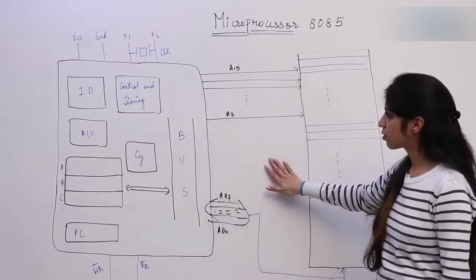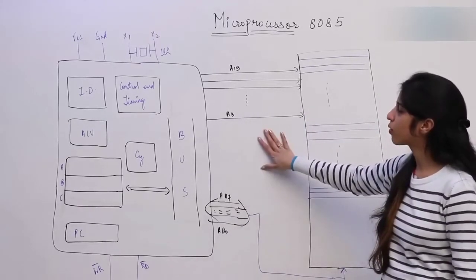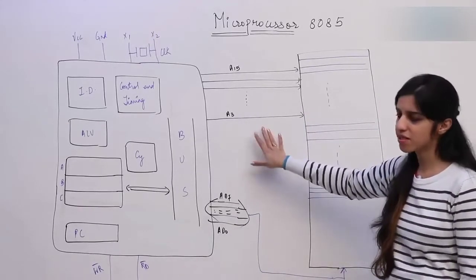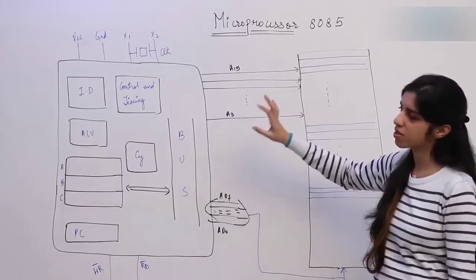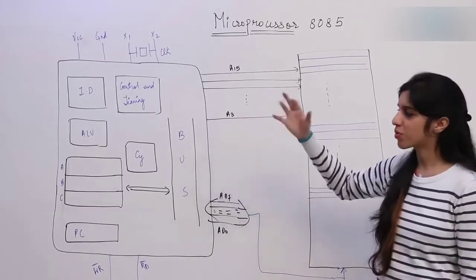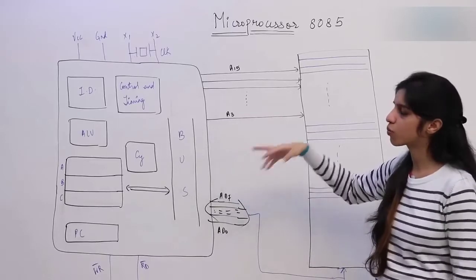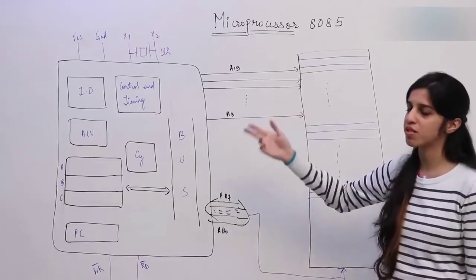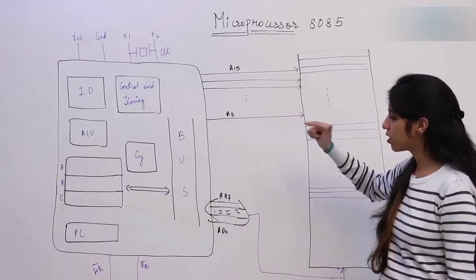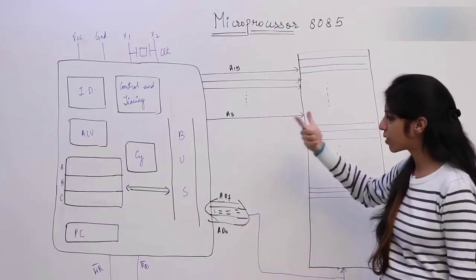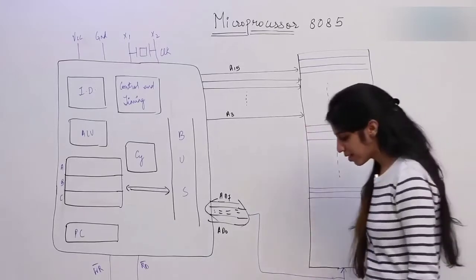Right now we are going to look at the basic structure of the microprocessor: how the microprocessor was designed, what was the intention, how things were placed, and what were the problems faced because of which we had to make some modifications.